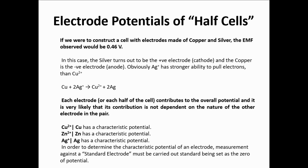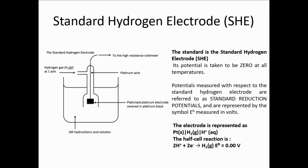In order to determine the characteristic potential of an electrode, measurement against a standard electrode must be carried out under standard conditions. If it's not standard conditions, then you can't really call it a standard electrode potential. The standard hydrogen electrode (SHE) is one of the most important standard electrodes. There are others, such as the standard silver/silver chloride electrode and the standard calomel electrode, but the SHE is one of particular importance. It is not regularly used because setting it up takes considerable work and time.